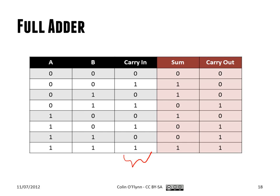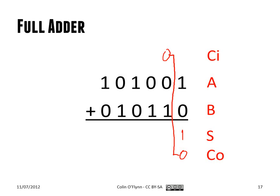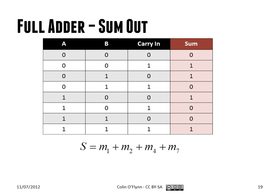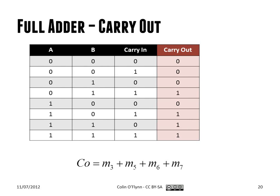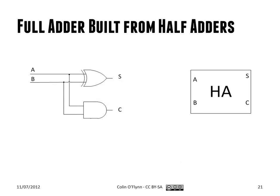For example, if we have all three as one — A, B, and carry in — we generate a sum and a carry out because the current column will have a one here. So if we had one, one, carry in of one, we'll also generate a carry. We can go through the same sort of logic synthesis and simplification process for this, but we'll show a faster way today rather than going through all the logic identities.